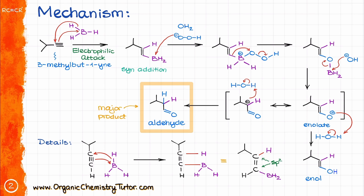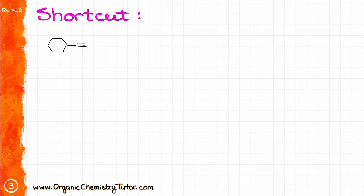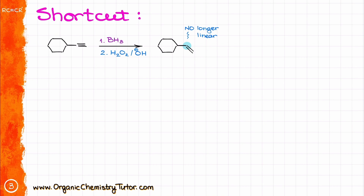If it makes it easier for you to visualize what's happening in this reaction using the enol midpoint, then you can certainly draw that as an intermediate. This can also be useful if you are using the shortcut to predict the product for this reaction. Let's look at cyclohexylethyne. If we are doing the hydroboration of this compound, I will first redraw my molecule but now with a double bond instead of a triple bond. Notice that I am drawing it at a 120-degree angle right away, because I know that the carbon will no longer be sp3 hybridized, so it's no longer going to have linear geometry. Then I'll add the OH group to the less substituted carbon of my bond, and that gives me my enol intermediate.